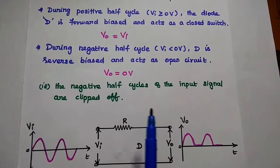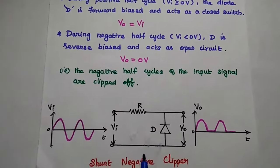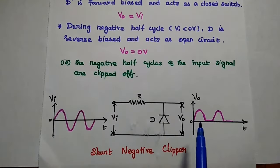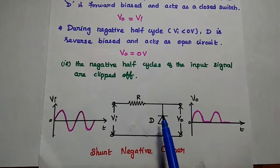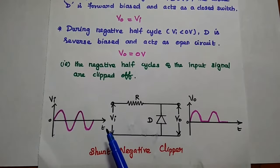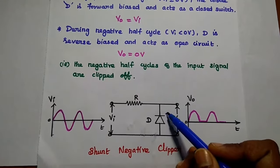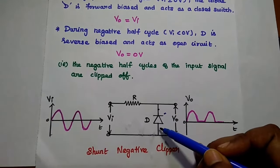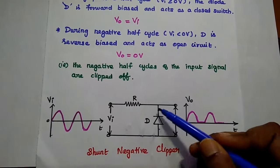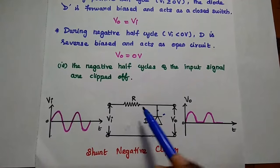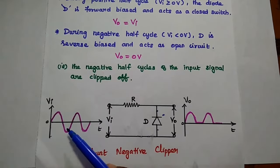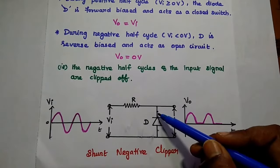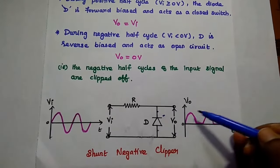We can clip off the negative half cycles of the input signal. Next is the shunt negative clipper. In the shunt negative clipper, the diode is connected in parallel with the load, with the negative terminal connected to the input side. During the positive half cycle, the diode is reverse biased and acts as an open circuit — there is no current flow in this branch — so whatever input is given, everything appears at the output. During the negative half cycle, the diode is forward biased and acts as a short circuit, so there is no output.